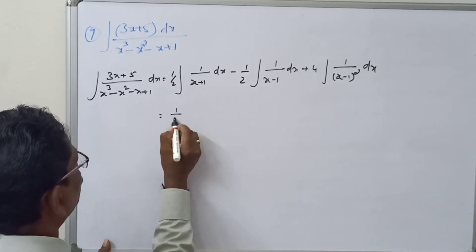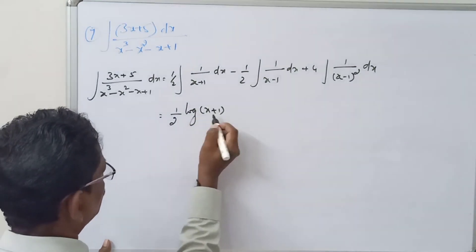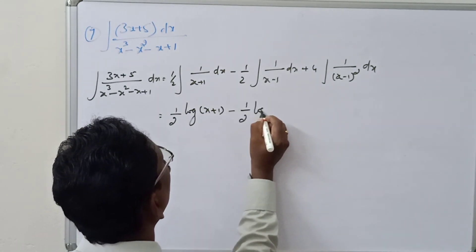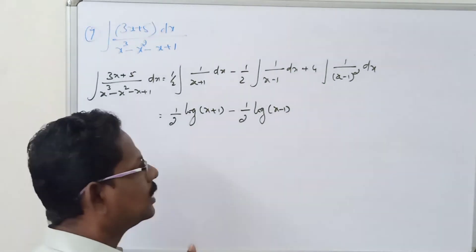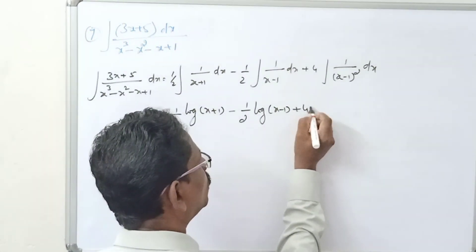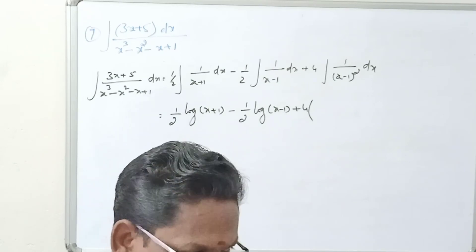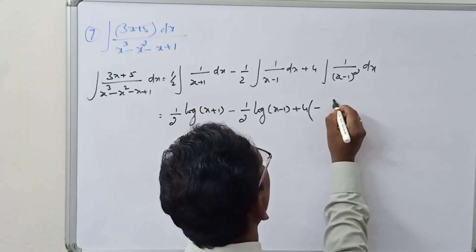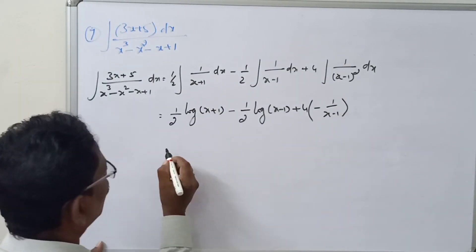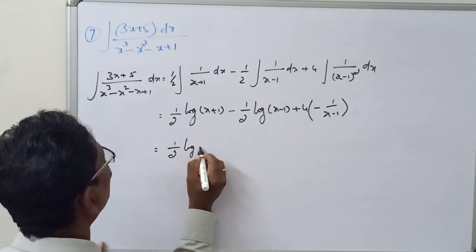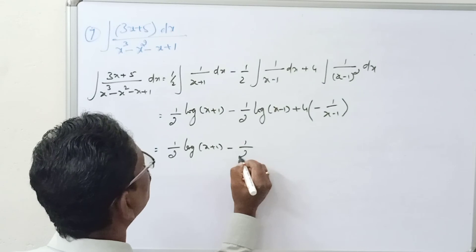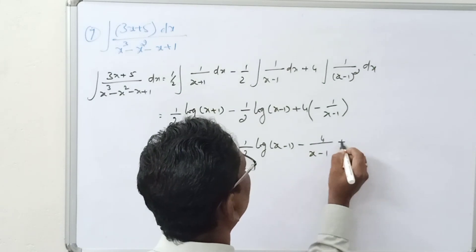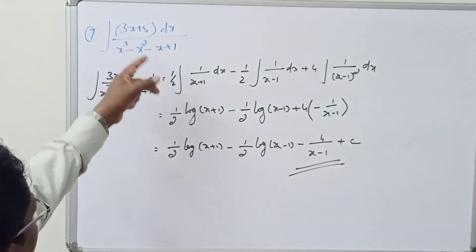Integrating each term: (1/2)log|x + 1| - (1/2)log|x - 1| + 4×(-1/(x - 1)), since the integral of 1/(x-1)² is -1/(x-1). So the final answer is: (1/2)log|x + 1| - (1/2)log|x - 1| - 4/(x - 1) + C.